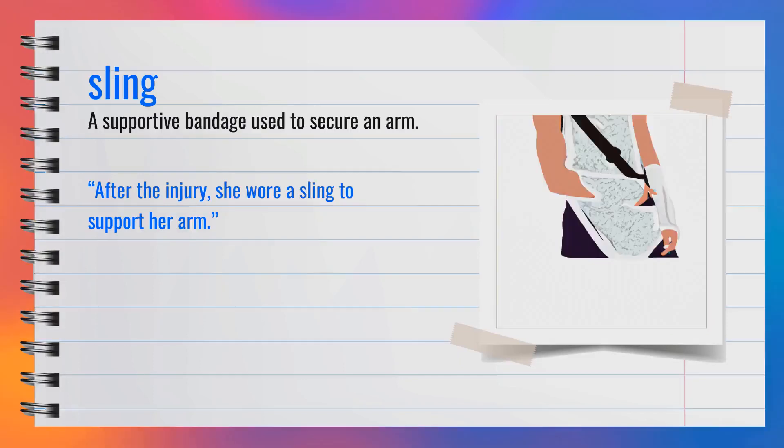The word sling is a noun, spelled S-L-I-N-G, pronounced 'sling.' A synonym could be support bandage. For example, after the injury she wore a sling to support her arm. A sling is a supportive bandage used to secure an arm.